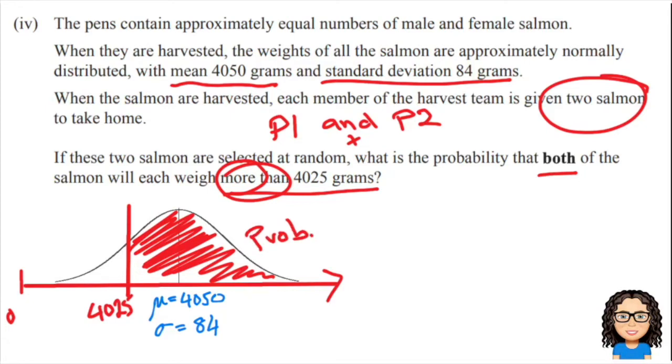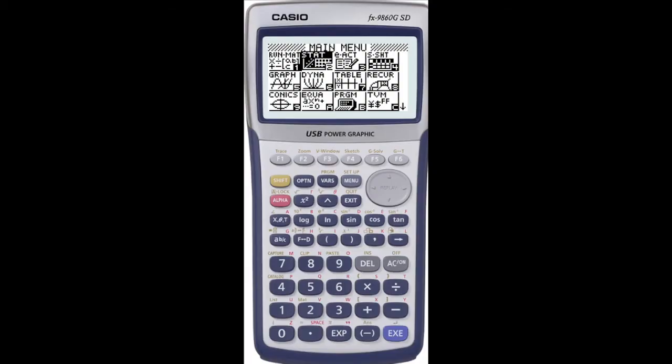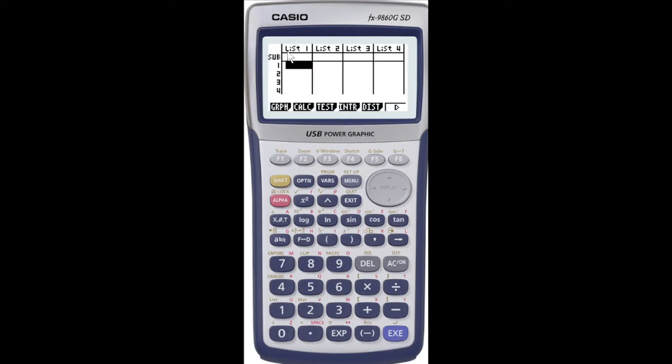There's two ways that we can find that probability. One is using our graphics calculator and the other is using our normal distribution tables. I'm going to show you both of those. We'll start by doing the graphics calculator first. So we're going to go into our stats menu, then we will do our distribution, which is F5. Then we want our normal distribution which is F1. And we are now finding a probability, so we want the NCD option.